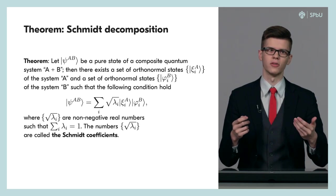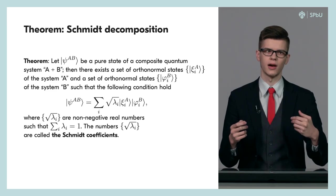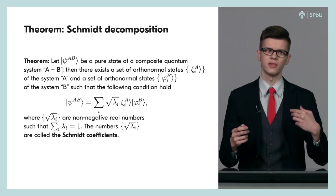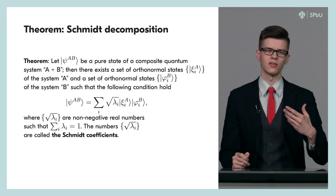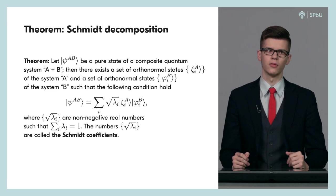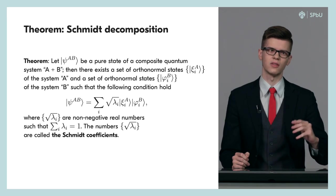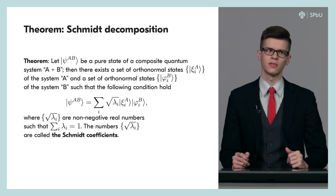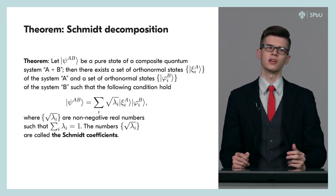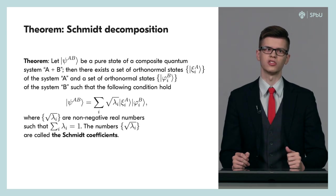Two certain sets of orthonormal states vector xi sub i and phi sub i for the subsystems A and B respectively exist, so that the state vector Psi sub AB of the whole system can be represented as the sum of the square root of lambda i times tensor product of vectors xi i and phi i. Such expansion is also known as the Schmidt decomposition.